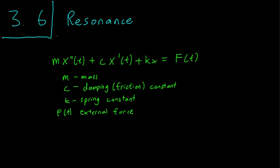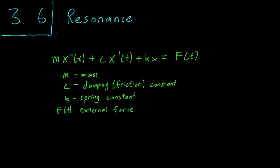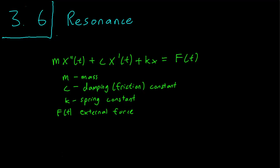Just a brief refresher on how we model mechanical systems that oscillate. We have here a simple mass-spring system, where M is the mass of the object, C is the friction coefficient, K is a spring constant, and F(t) is an external force. If you need a refresher on how we got this equation, please consult the videos in section 3.4.